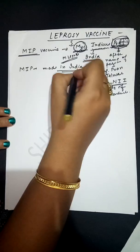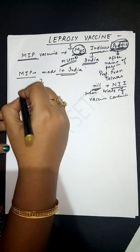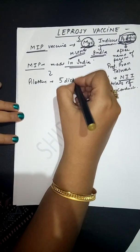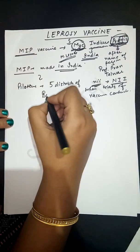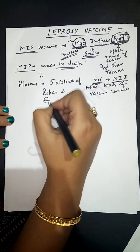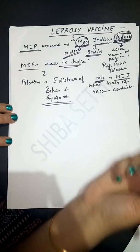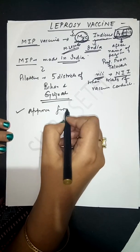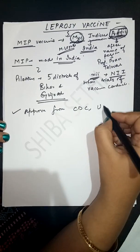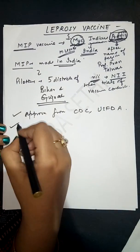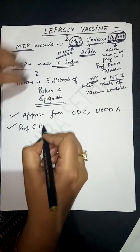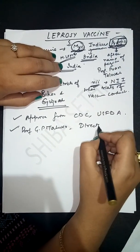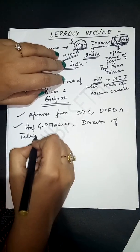The piloting of this MIP vaccine is going on in five districts of Bihar and Gujarat. This vaccine received approval from CDC and USFDA. Professor GP Talwar, Director of the Talwar Research Foundation, introduced this MIP vaccine.